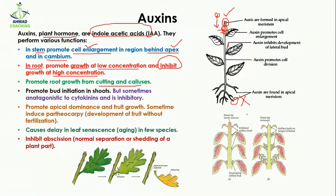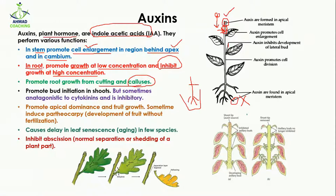Auxins also promote root growth from cuttings and calluses. For example, if you cut a stem and plant it in a new pot, auxins increase root growth there. Calluses are groups of cells formed when a tree is injured, and auxins promote growth at those points as well.